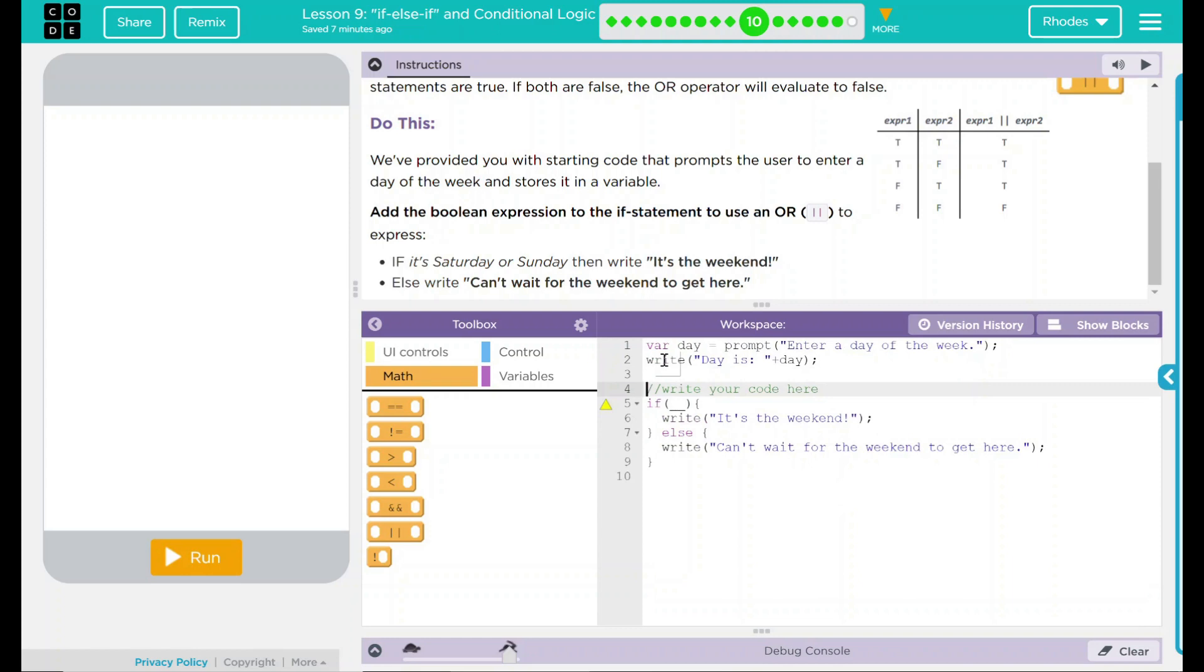Below here, we're going to enter our code. We have an if statement right here. If something happens, write it's the weekend. Else, write can't wait for the weekend to get here. Seems pretty straightforward. So what we're really doing is using the OR operator here. I am using a little bit different of a keyboard, and it's kind of a hassle for me to get to that. So I'll actually be dragging this out most of the time.